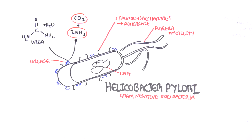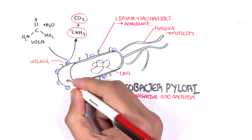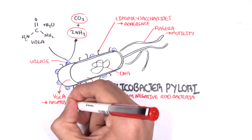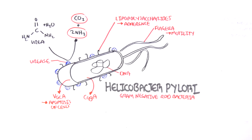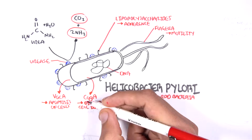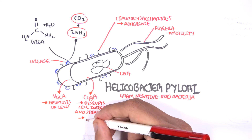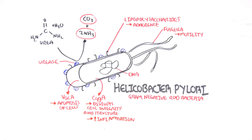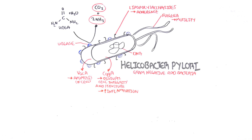Ammonia (NH3) is quite basic, so it's alkaline. H. pylori can also secrete exotoxins such as VacA and CagA. VacA essentially causes apoptosis of cells, and CagA is responsible for disrupting cellular integrity and structure, and also promotes inflammation.